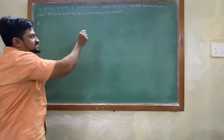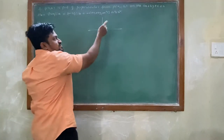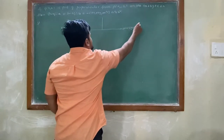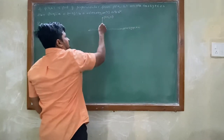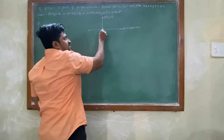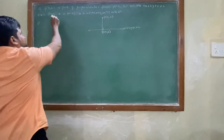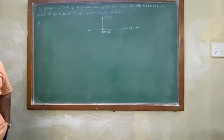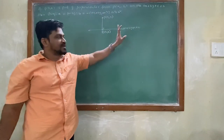Foot of perpendicular means: there is a line ax+by+c=0 given to us. This is point P, and the perpendicular drawn from P meets the line at Q(h,k), which is the foot of perpendicular. We have to show that (h-x1)/a = (k-y1)/b. To prove this, we draw PQ perpendicular to the line.